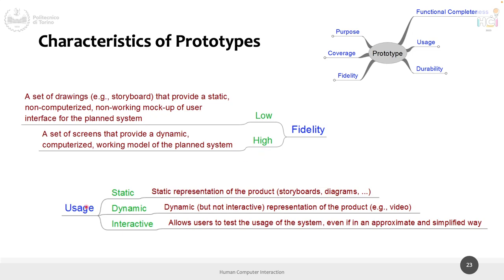Prototypes can also vary in usage: static like a storyboard, dynamic where you observe but can't interact, or fully interactive where you tap and click. Low fidelity is a set of drawings providing a static non-working mock-up of the user interface. High fidelity is a set of screens that are dynamic, interactive, and computerized — working for the main features and tasks, even if not 100% feature complete.